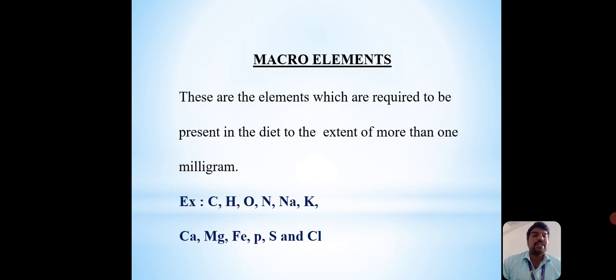Macro elements are the elements which are required to be present in a diet to the extent of more than one milligram. Examples are carbon, hydrogen, oxygen, nitrogen, sodium, potassium, calcium, magnesium, iron, phosphorus, sulfur and chlorine.